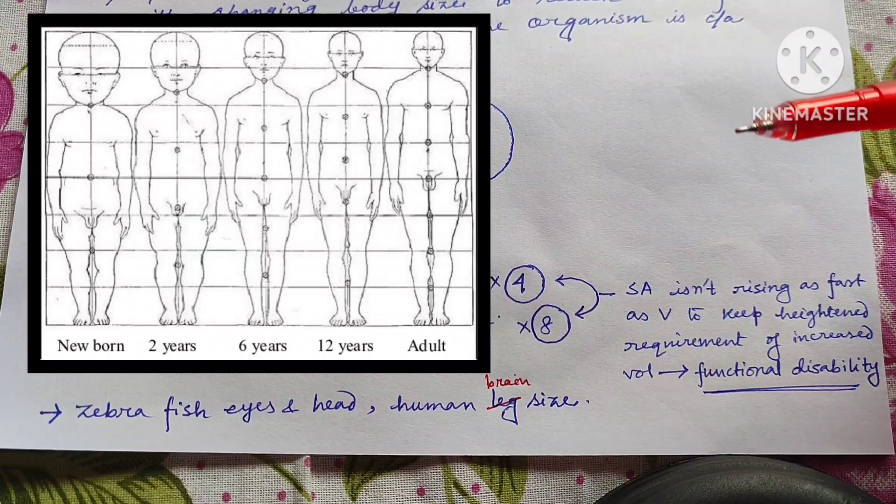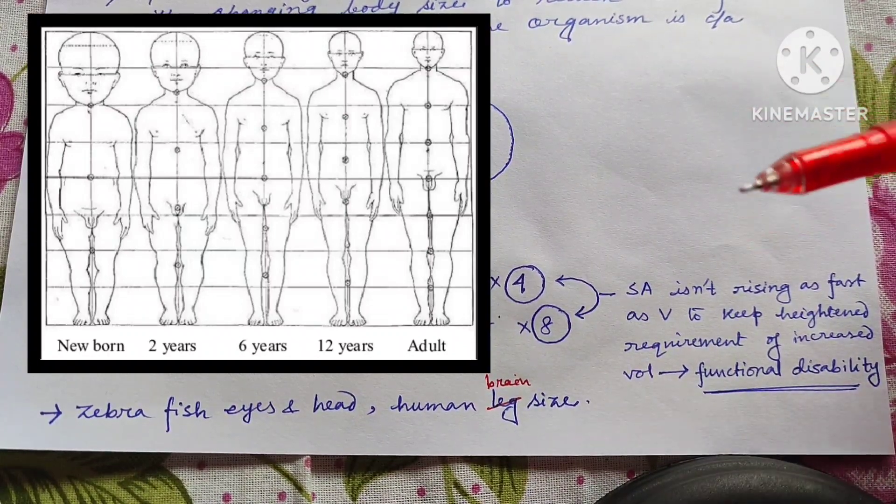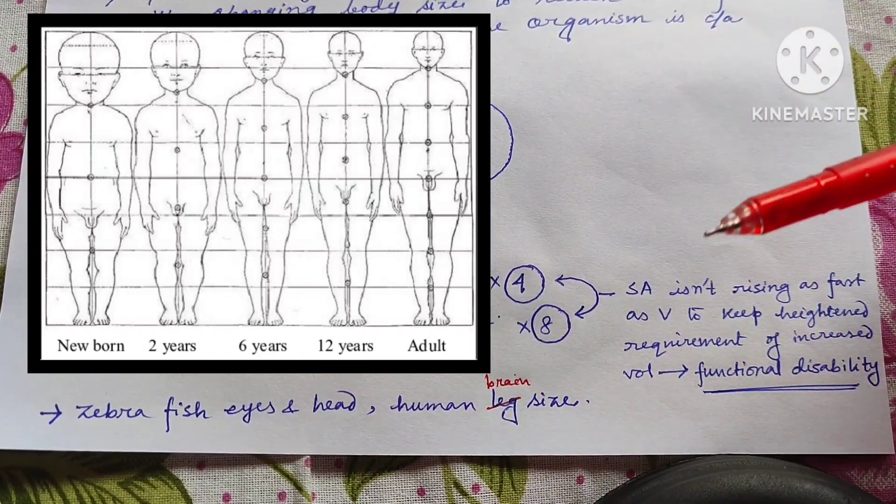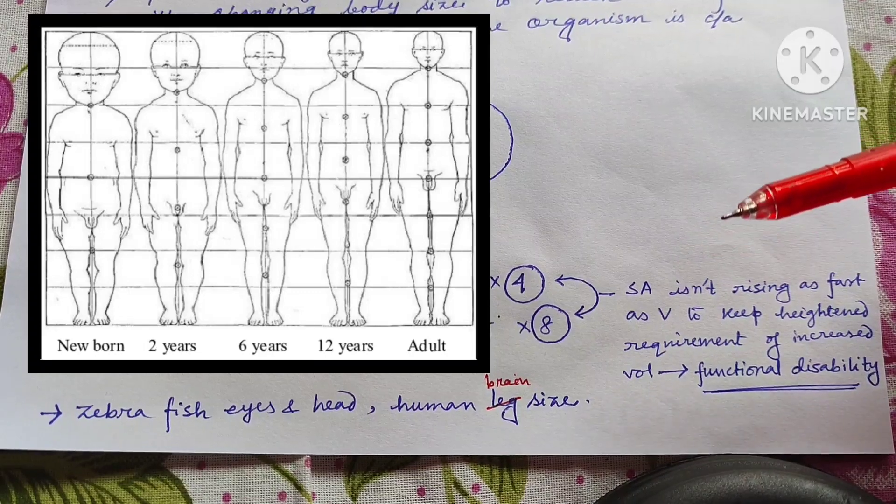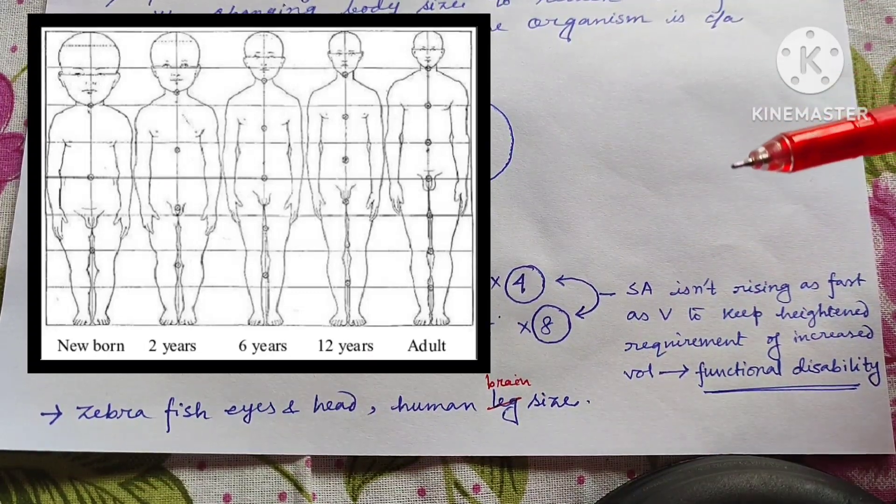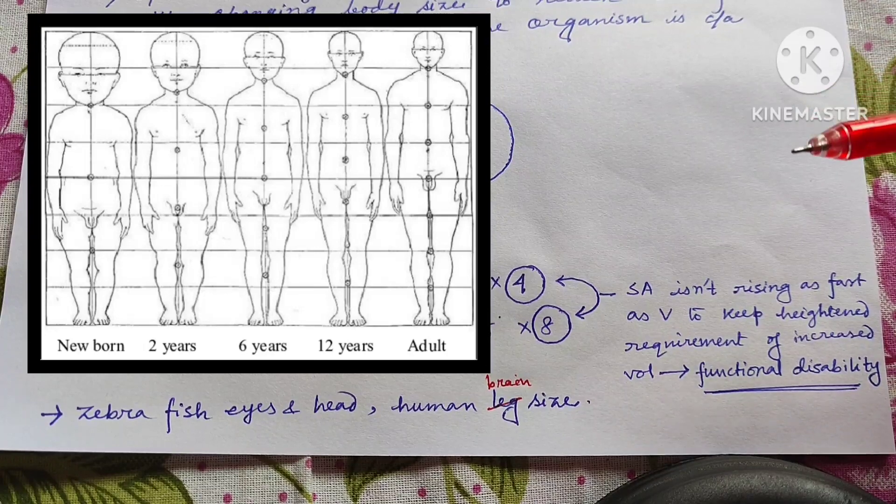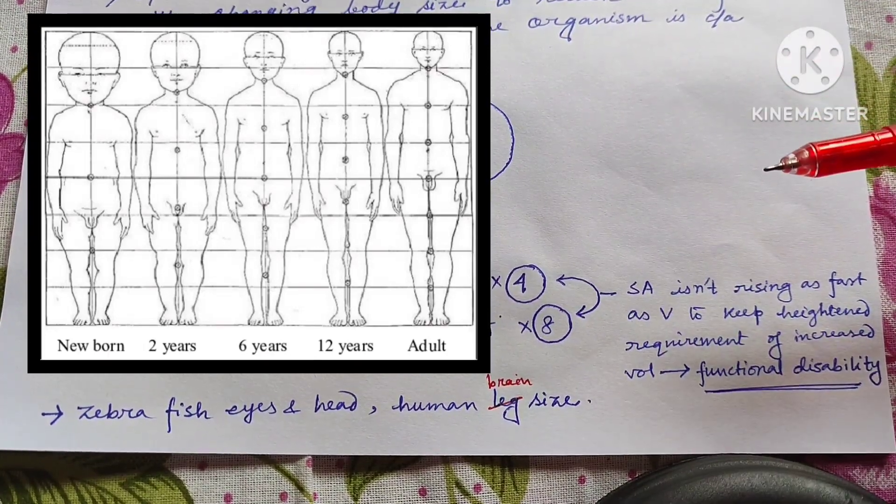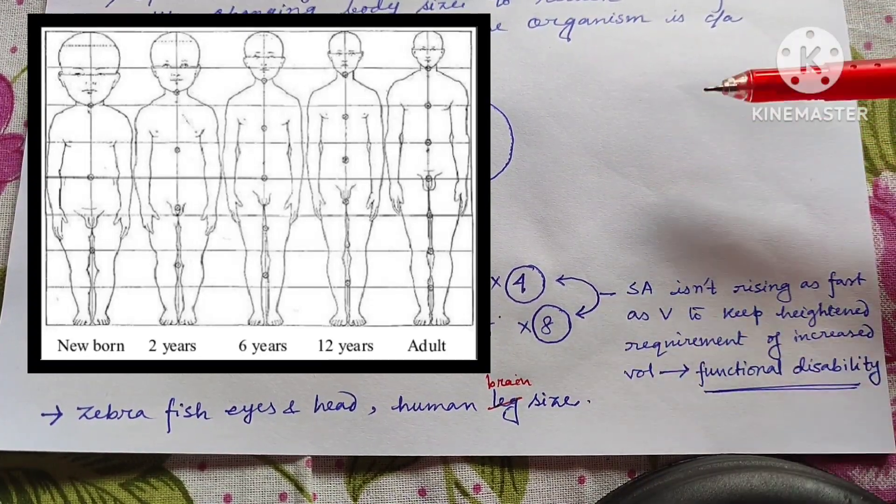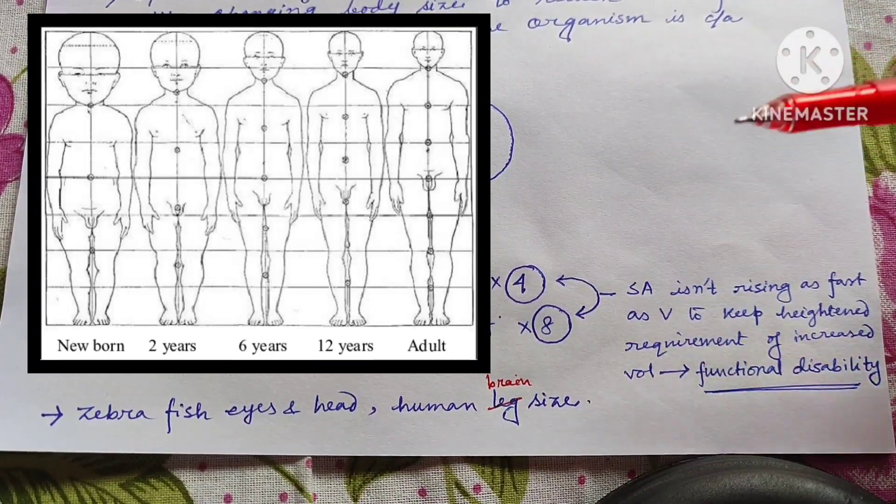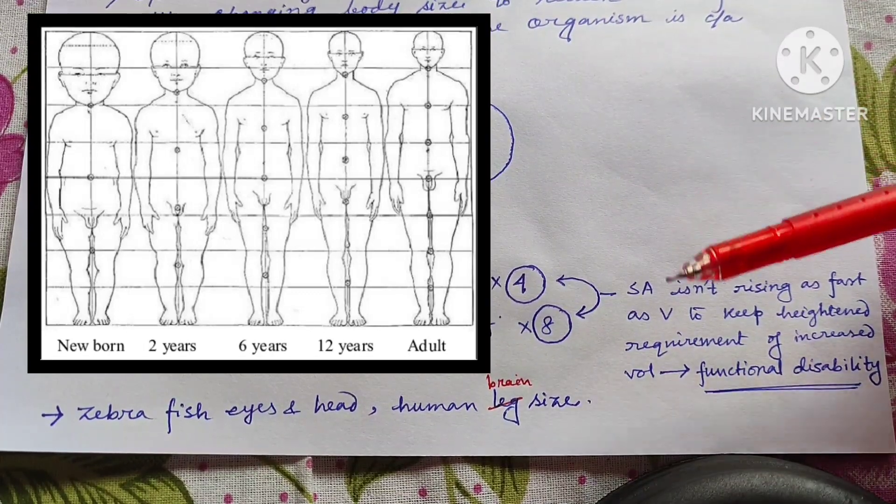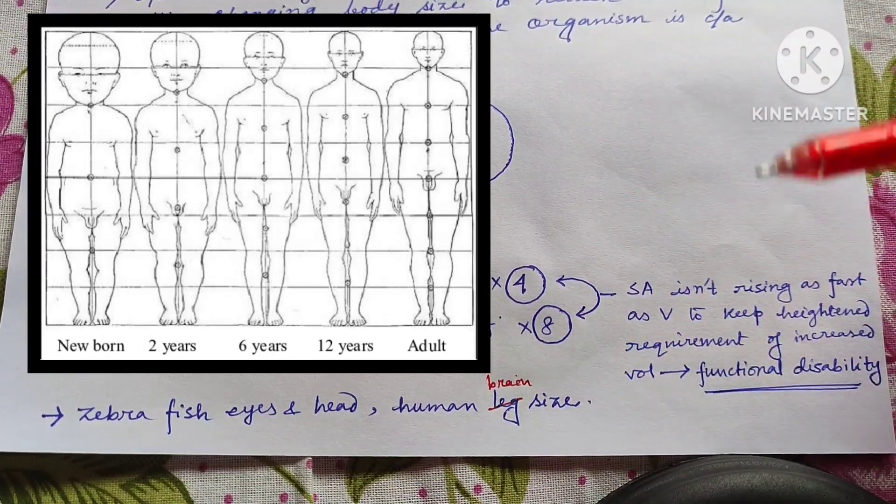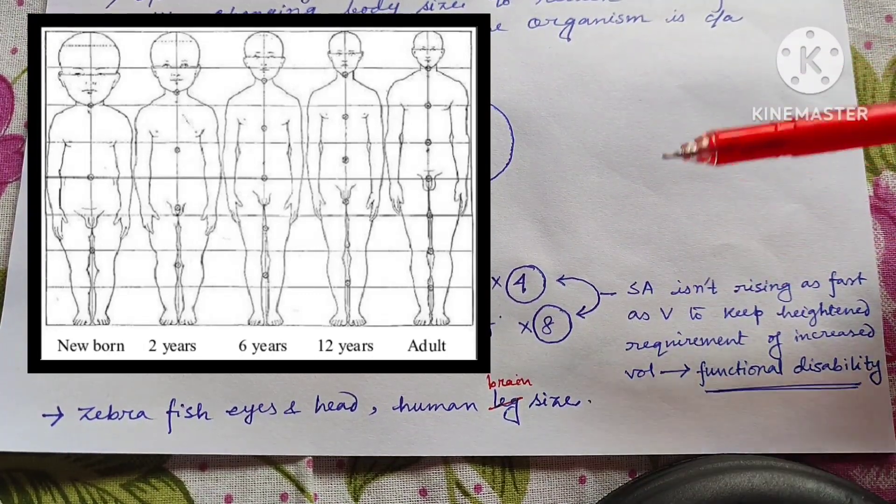Because let's say if our brain has increased isometrically, so in our adult condition our head length or our brain length will be so much that we will not be able to carry that much volume of brain and we cannot be able to walk on land. So for that reason, to maintain our functional ability of walking and other works, our brain size has not increased so much like in our fetal condition. So it has shown allometric increasement.